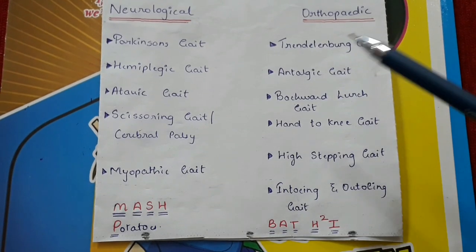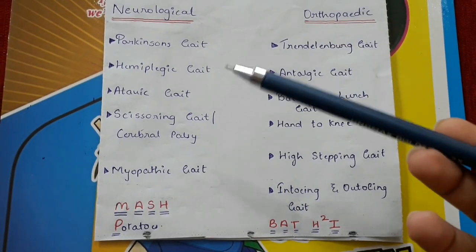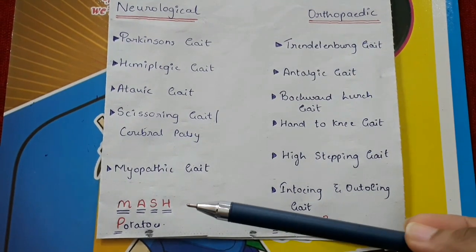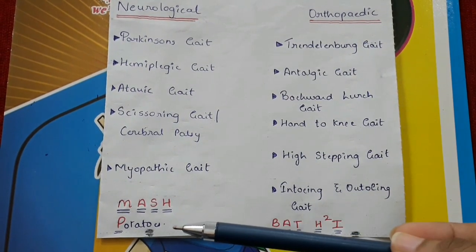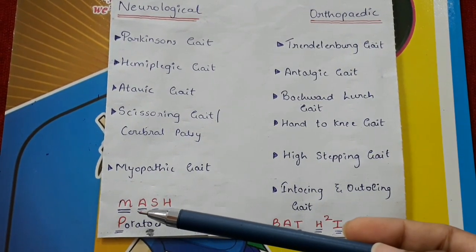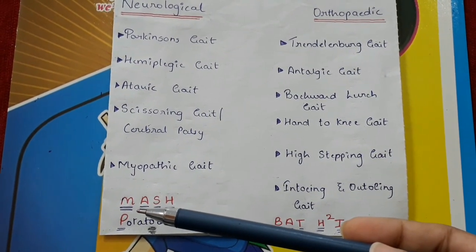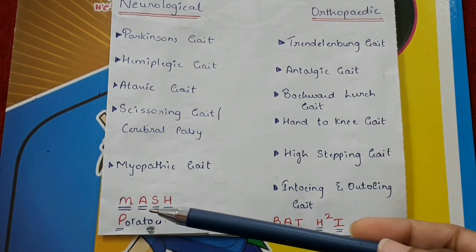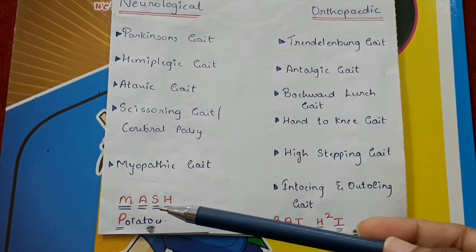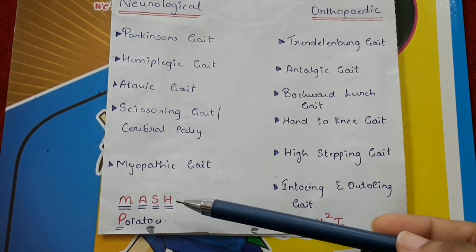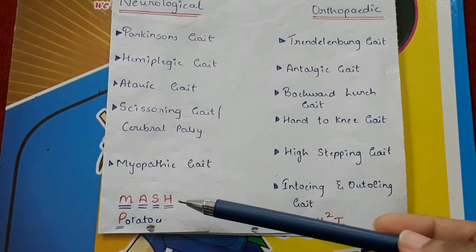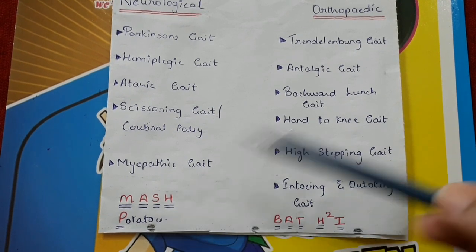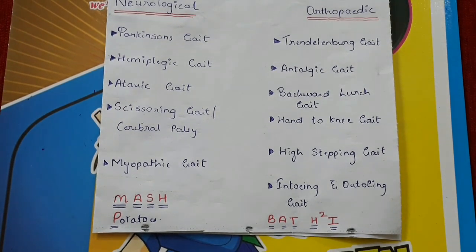A mnemonic to remember neurological gaits is 'mashed potatoes': M for myopathic gait, A for ataxic gait, S for scissoring gait, H for hemiplegic gait, P for Parkinson's gait.